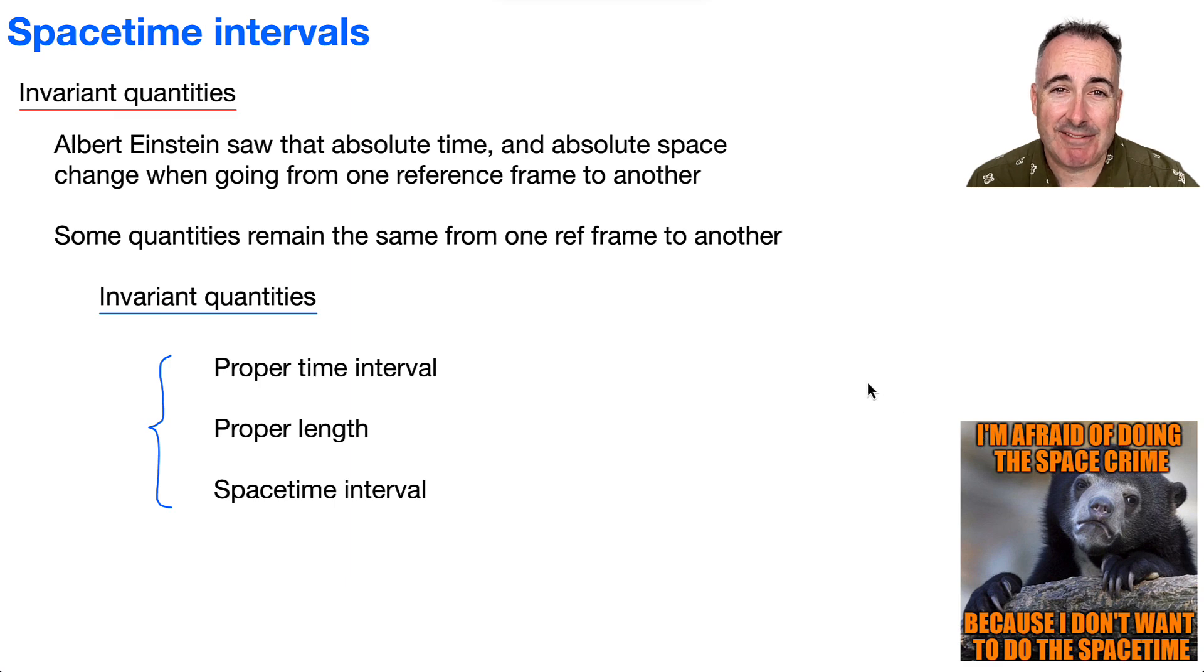So let's discuss invariant quantities. What do we mean by that? Well, invariant means it doesn't vary, it doesn't change. So Einstein, he saw that absolute time and absolute space, they change when going from one reference frame to another. But there's some quantities that do remain the same, and this is actually really important in relativity when you're doing more advanced things. Quantities that actually stay the same from one reference frame to another are really important. So that's why we call these invariant quantities.